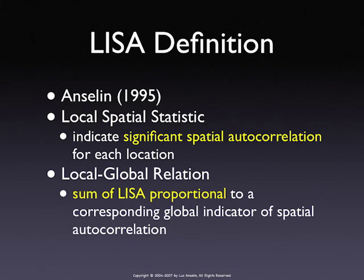The bottom line is that there should be some constancy in this association, no matter where you are in the dataset. You shouldn't have, for example in an extreme case, that the northern half of your map shows no correlation whatsoever, and the southern part shows strong correlation. That is an instance of where stationarity is violated. You can think of this as a moving window over the data — as you move your window, the mean stays the same, the variance stays the same, and the covariance should stay the same.